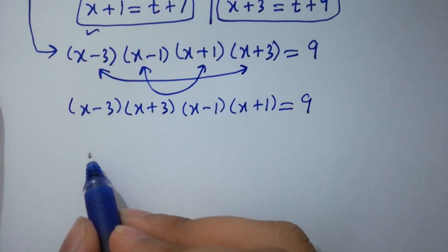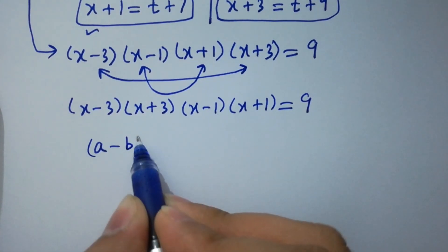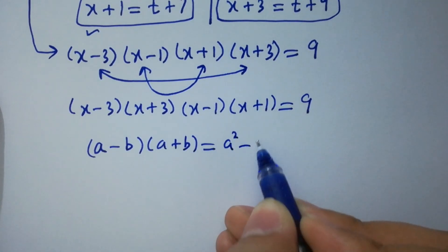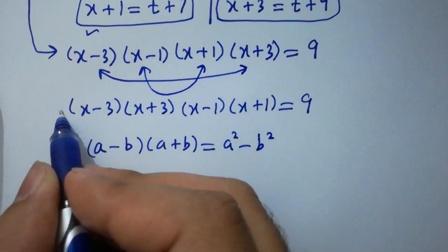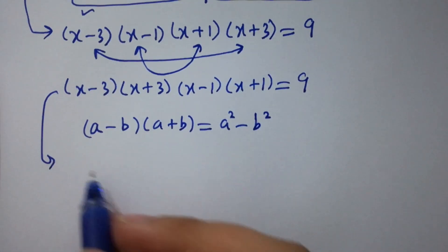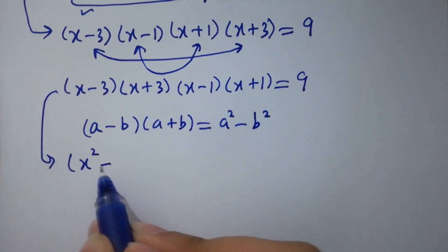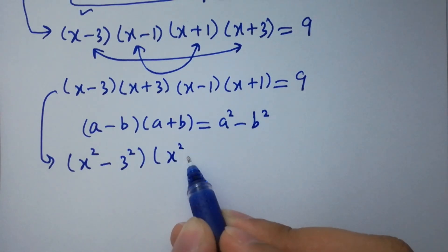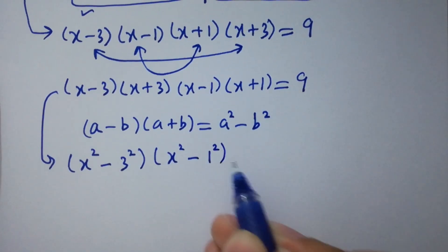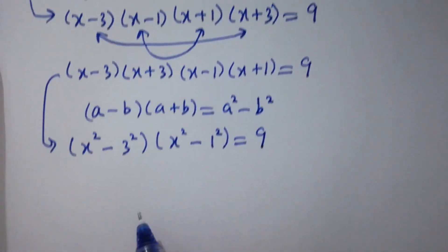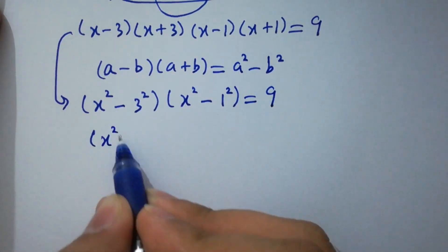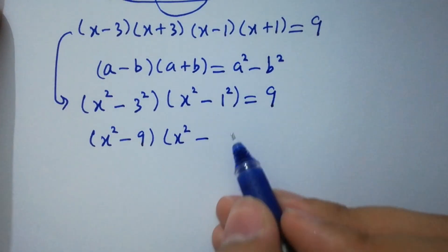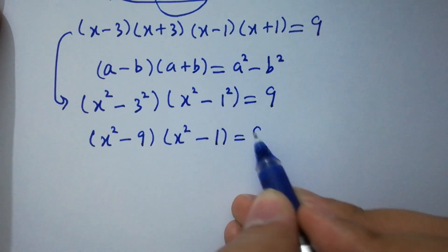As we know, (a-b)(a+b) = a² - b². Then it will be (x²-3²) · (x²-1²) = 9, giving us (x²-9)(x²-1) = 9.